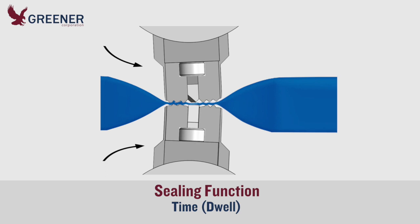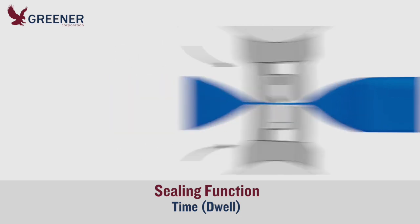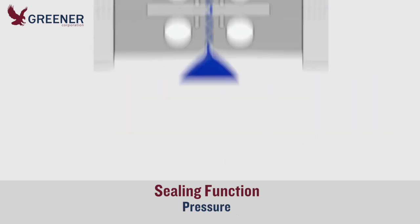Time, often referred to as dwell, is the duration that the sealing jaws remain in contact with the packaging film. To produce a quality bond, the sealing jaws and film must remain in contact long enough for adequate heat to penetrate through to and melt the sealant layer.